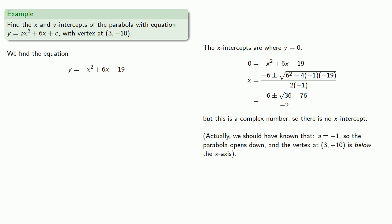Actually, we should have known that from the beginning. a = -1, so the parabola opens downward. And the vertex at (3, -10) is below the x-axis. So if you think about what that looks like, there's no way that this parabola can intersect the x-axis.